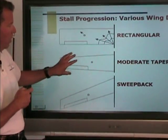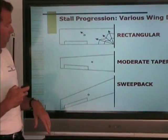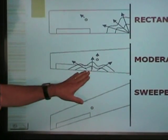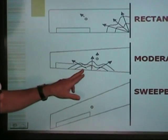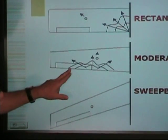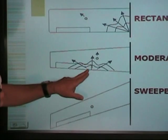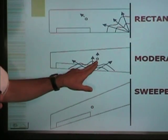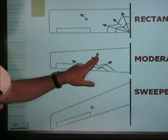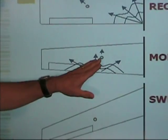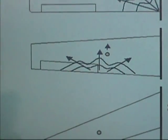Look at the moderately tapered wing. Where is boundary layer separation going to happen? It's actually going to happen a little farther outboard. Notice now that ailerons are being affected. Once again, the center of pressure is going to move forward in this particular case.